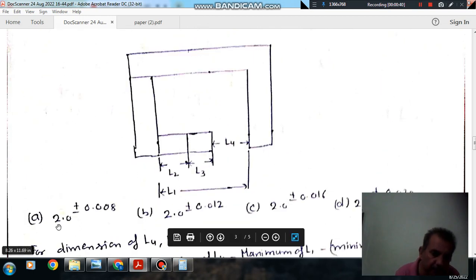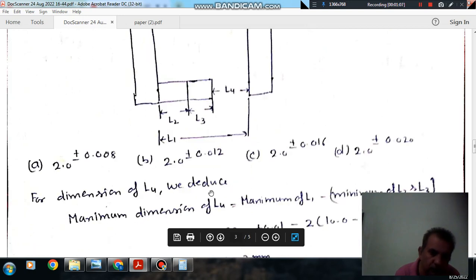Option A, 2.0 plus minus 0.008. Option B, 2.0 plus minus 0.012. Option C, 2.0 plus minus 0.016. Option D, 2.0 plus minus 0.20.